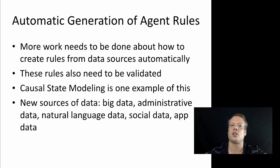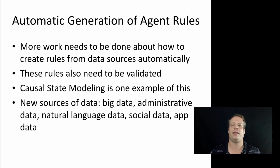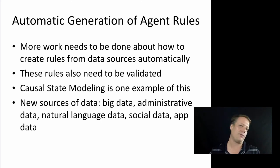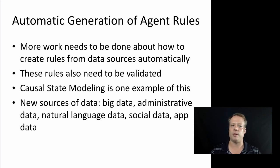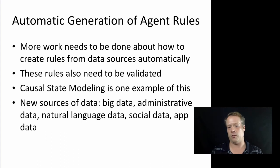One of those trends is the automatic generation of agent rules. We have this huge amount of big data now being collected about what humans and entities are doing around the world. We have sensors on everything, the Internet of Things is exploding, we have social data, app data, and data about the phones in everybody's pockets. The question is: can we use that to automatically define rules that capture the essence of human actions — how humans move through the world, how they interact with the Internet of Things, and how the IoT interacts with itself as cars become more automated?